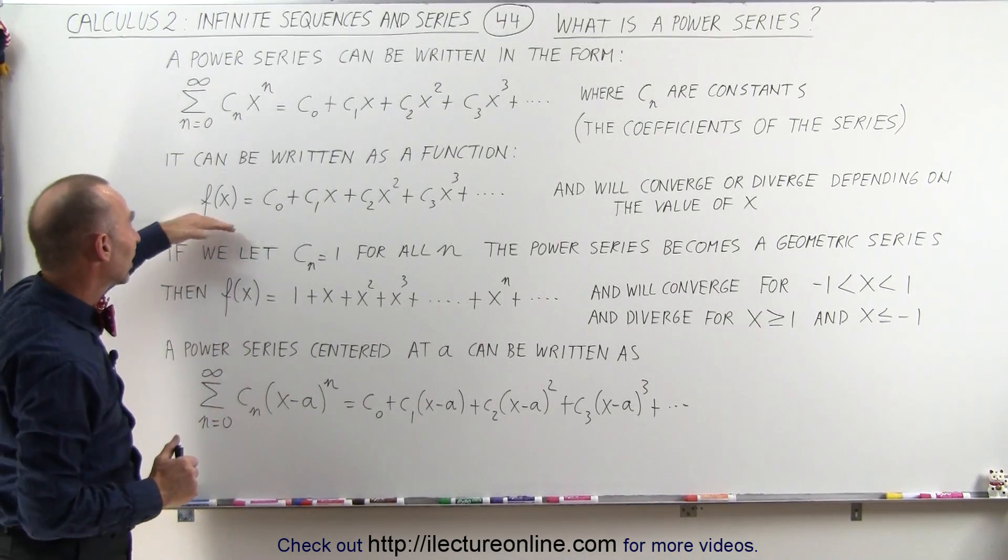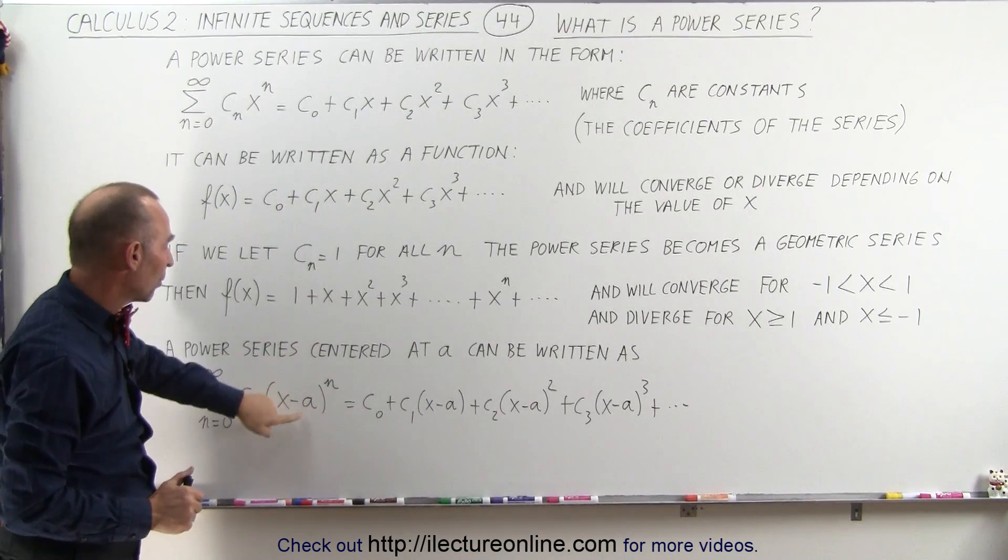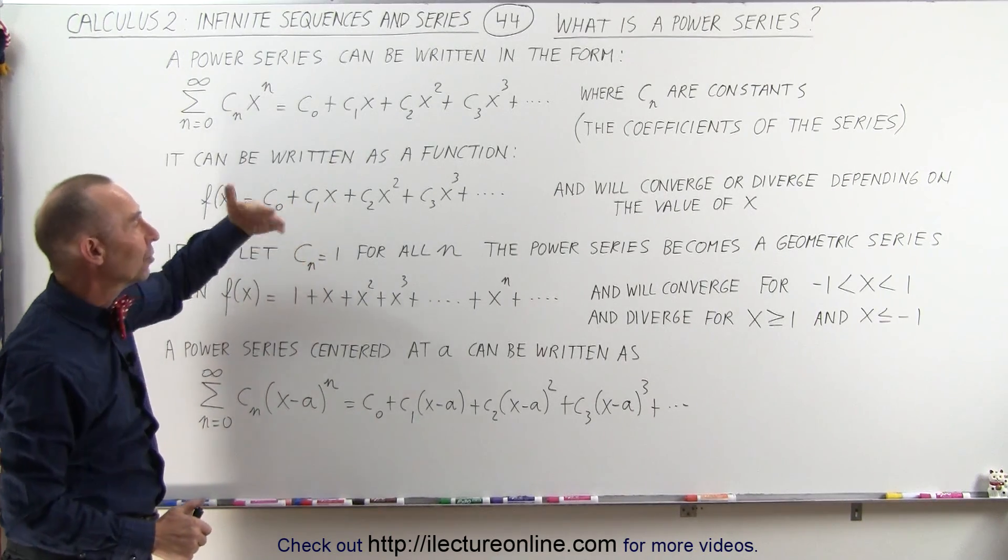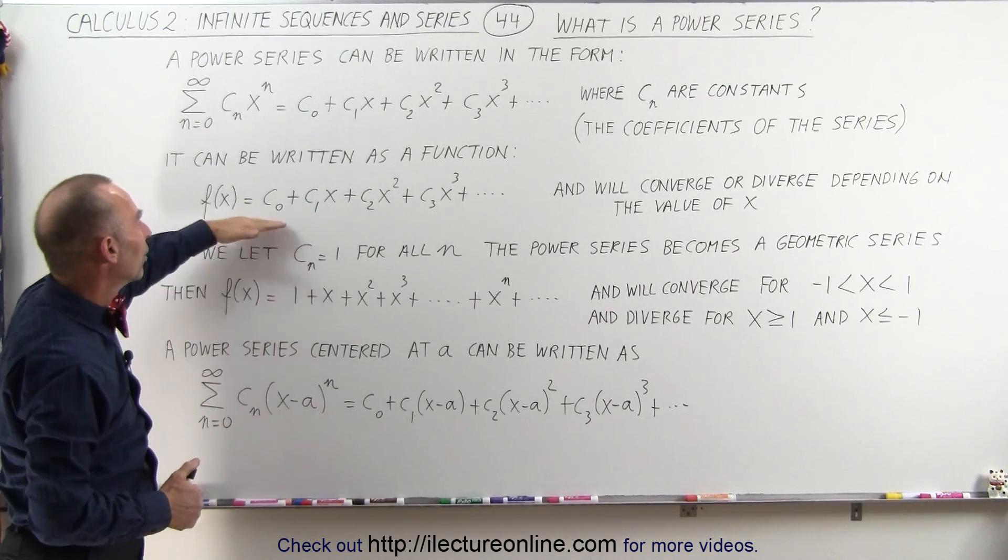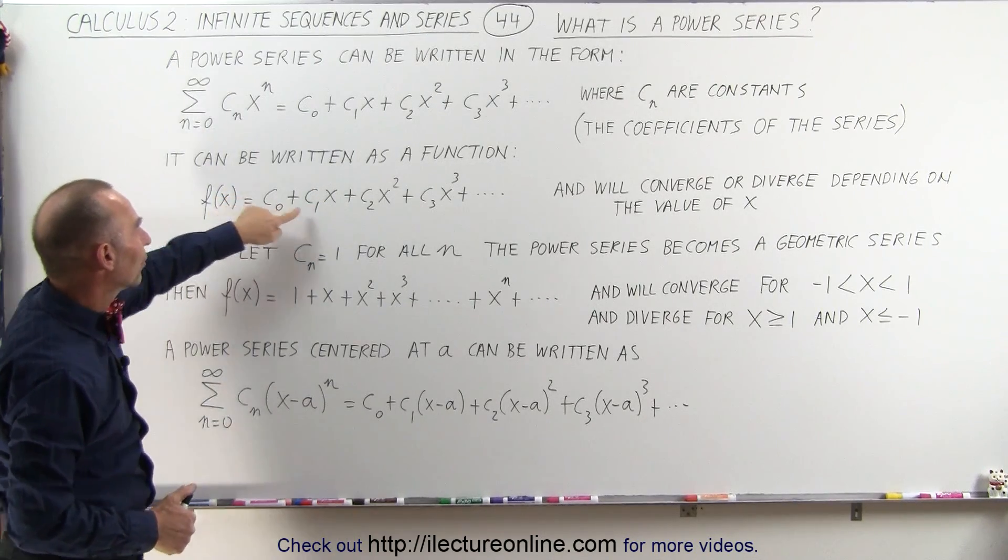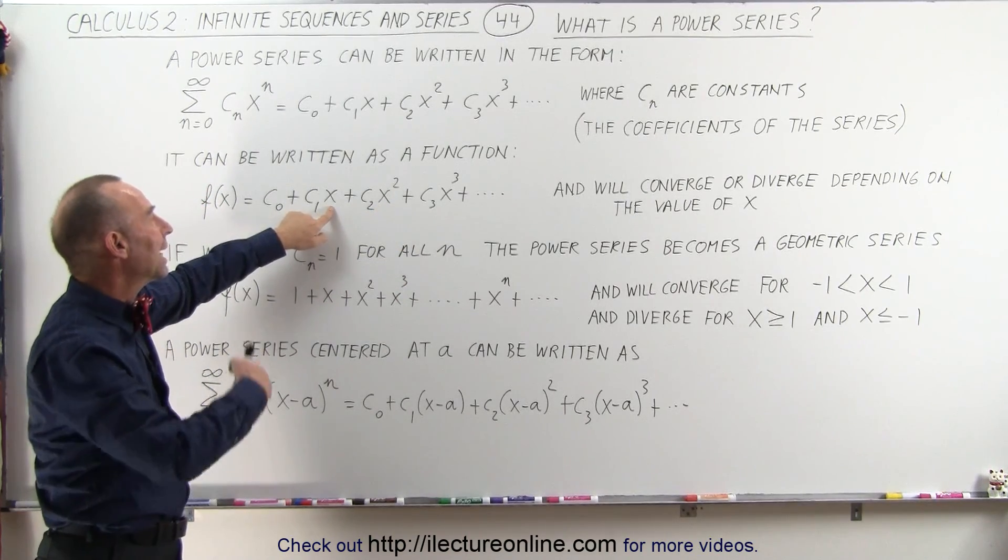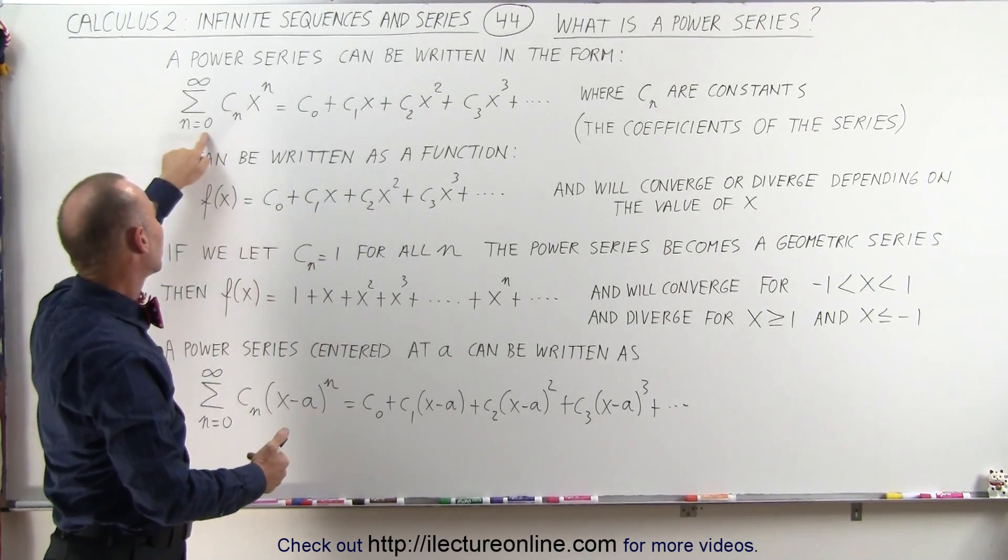And so we can then write the function like this. Instead of x, we simply replace it by x minus a, and then we have a function written as the infinite summation of terms that have a different constant for each term, and an x minus a raised to the n power, n going from 0 to infinity.